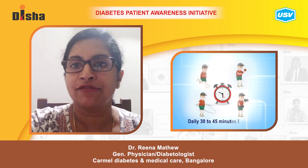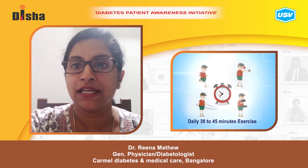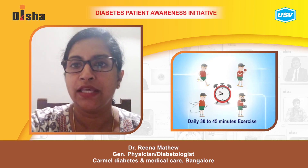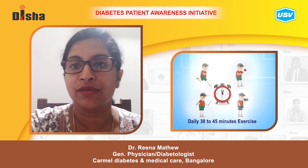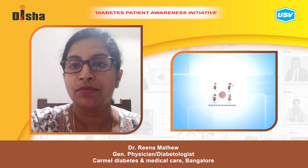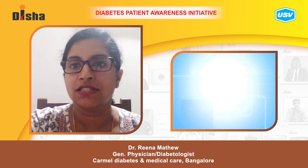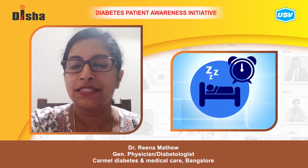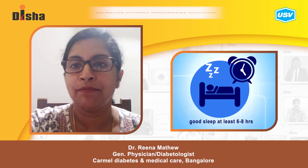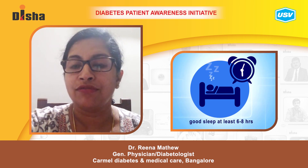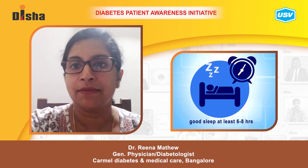Exercise of about 45 minutes, 5 times a week, is mandatory to reduce abdominal fat, reduce weight, and improve insulin resistance. Having proper sleep timing and the right number of hours of sleep is very important for insulin to work better in the body and to maintain body weight.